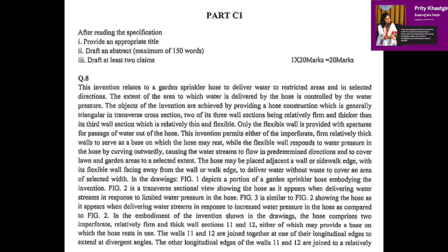Reading the first sentence: 'This invention relates to a garden sprinkler hose to deliver water to restricted areas and in selected directions.' This means the invention is delivering water in a particular area and in a particular direction. The emphasis on 'selected direction' means there are some angles in the invention itself which enable the garden sprinkler hose to deliver water in selected directions.